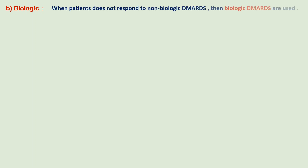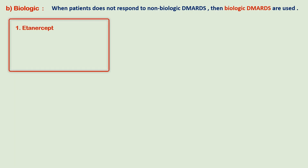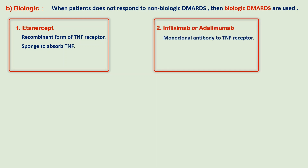Now let's discuss the biological DMARDs. These drugs are used for patients who do not respond to non-biological agents. Etanercept is a recombinant form of the TNF receptor and acts as a sponge to absorb TNF, which is involved in various immune reactions. The next category is the monoclonal antibody to TNF — infliximab and adalimumab — which neutralize TNF.